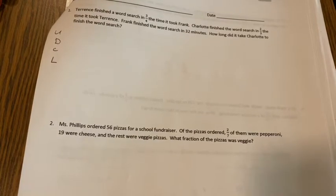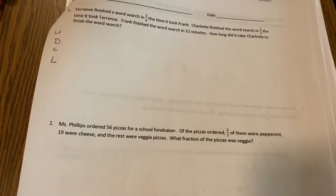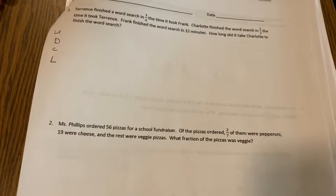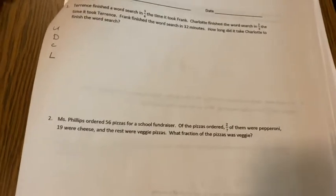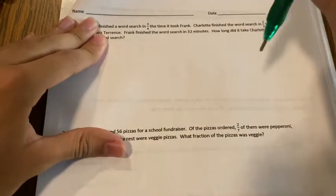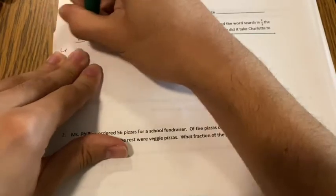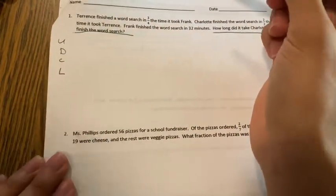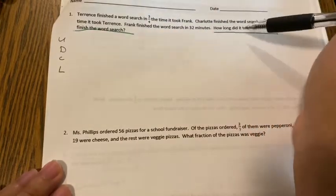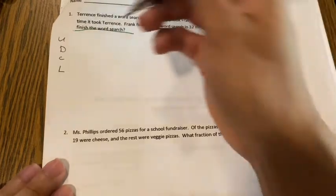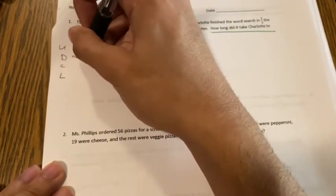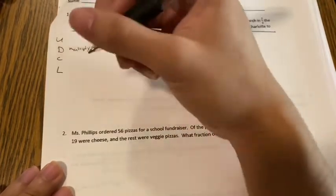So number 1 says, Terrence finished the word search in 3 fourths the time it took Frank. Charlotte finished the word search in 2 thirds the time it took Terrence. So it's kind of starting to sound like a puzzle. Frank finished the word search in 32 minutes. How long did it take Charlotte to finish the word search? Alright. Well, the easy part for this one is I think that I know my U. My U is how long did it take Charlotte to finish the word search? That's what I need to solve for, right? So I know that whatever answer I get, it should be answering this question. Next up, draft a plan? I don't know. I maybe have to multiply or add.